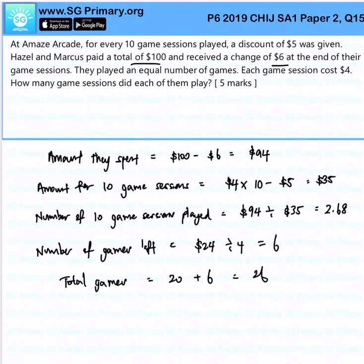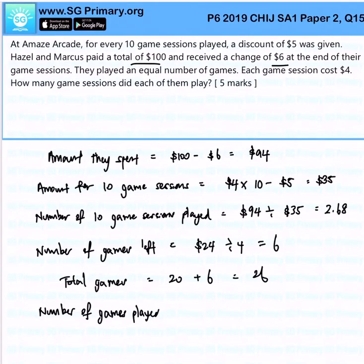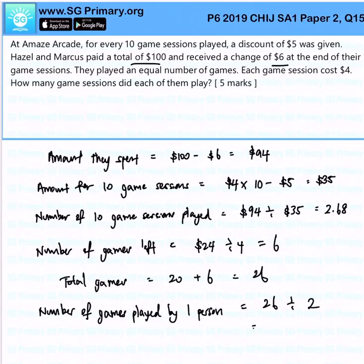The number of games played by one person is 26 divided by 2, giving us 13. That is the solution for this question.